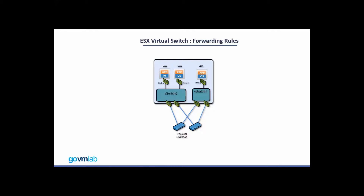Welcome to this lecture on ESXi virtual switch forwarding rules. Have you ever been confused between ESXi virtual switch supported and not supported data paths? Have you ever had questions about how traffic will be forwarded when two VMs are running on the same ESXi host and same virtual switch? Will traffic go through the uplink or not? What will happen when two VMs are running on two different switches of the same ESXi host? Hopefully this tutorial should clarify your data path queries regarding vSphere networking.